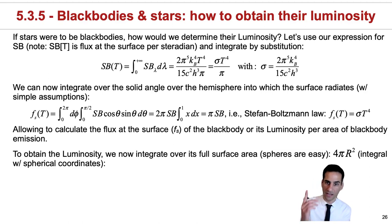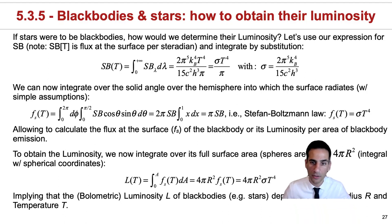That is because f_s is the flux of the surface of that specific object. Now spheres are relatively simple, and therefore when we integrate over the full surface, we will get this factor of 4π R², and ultimately what we get for the luminosity of a blackbody will be given as 4π R² and then Stefan-Boltzmann law, which is σT⁴.